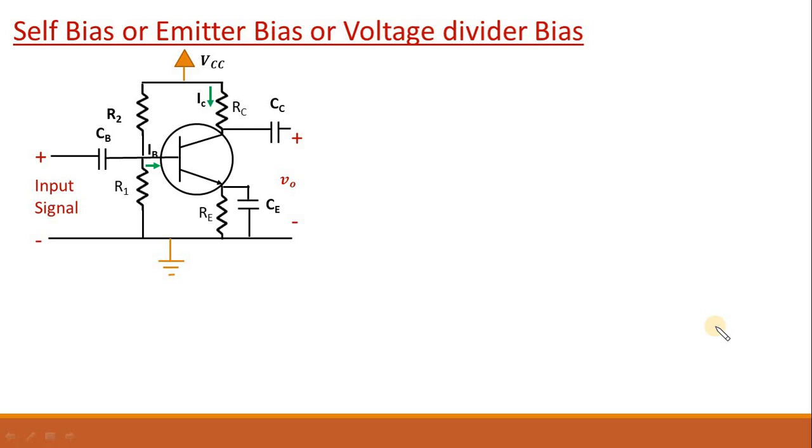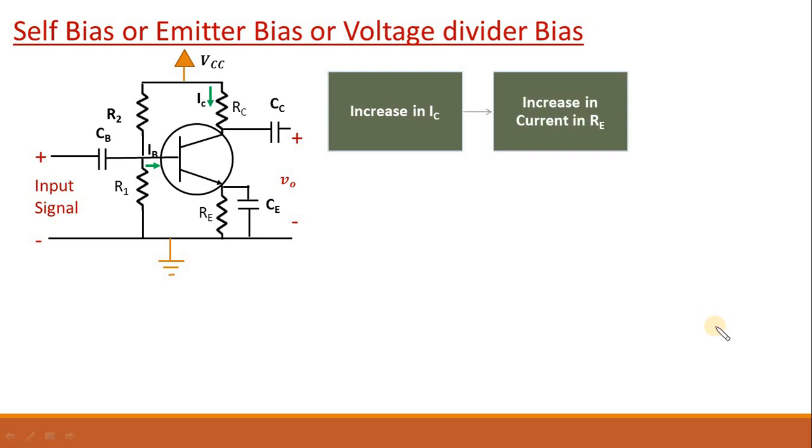Before going into mathematical details let me explain physically how it is working. Let's suppose by any means there is increase in IC. Then what will happen? Then the current in the RE will automatically increase because current through RE is IB plus IC. So if IC will increase, current in the resistance RE will automatically increase.